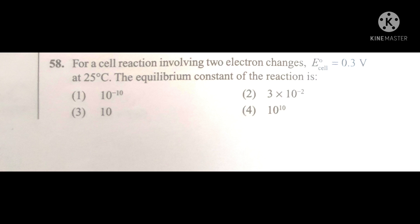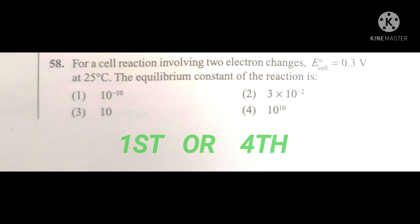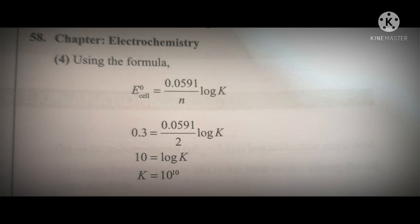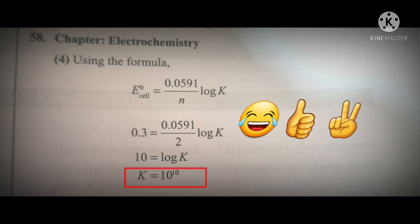In this question, option first and option fourth can be the answer because both are having 10 power. To decide the correct sign — whether plus 10 or 10 — we take the help of other options. In the second option, both numbers 2 and 5 appear, and the probability of the plus sign being more helps find our answer. Therefore, the fourth option will be the correct answer. You can verify your answer here.